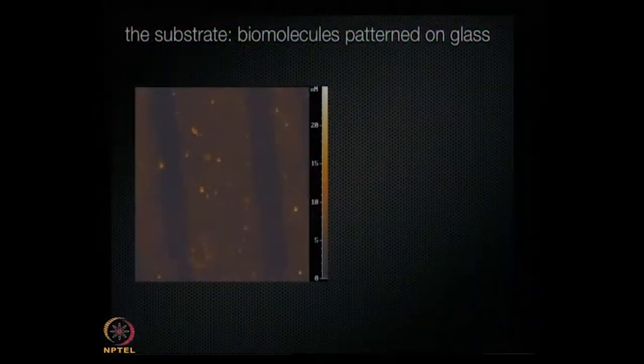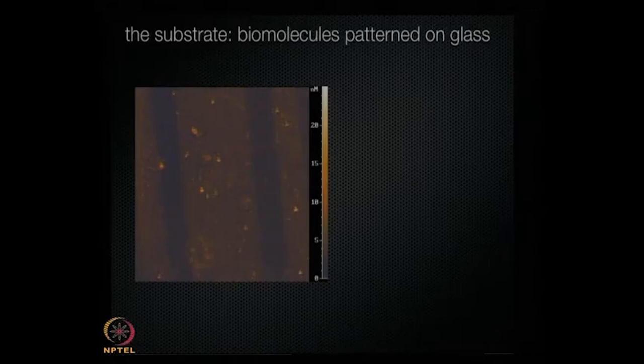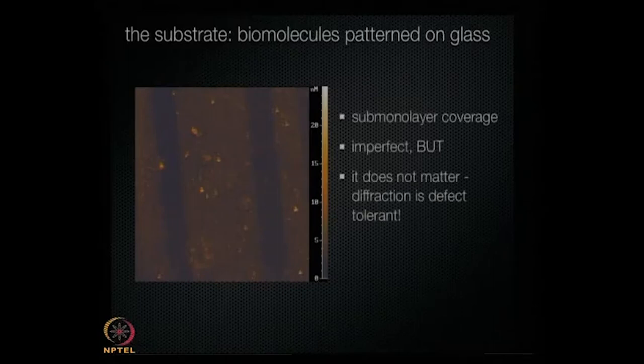Let me show you implementation-wise how simple this can be. This technique was invented in my lab. Here's the example of a substrate where we've patterned the biomolecules — this protein — on a piece of glass. It's a sub-monolayer coverage. It's very small, a very sparse amount of protein in there, and it's imperfect.